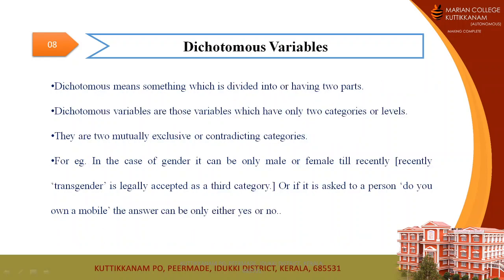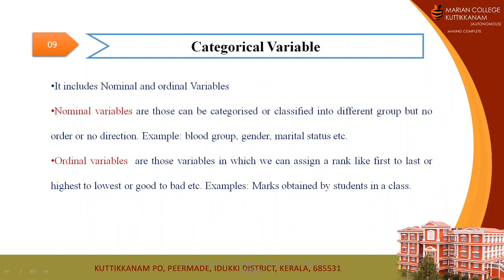Moving on to the next type: dichotomous variable. Dichotomy means something divided into two parts — a positive and negative side. If you ask a respondent, 'Do you have a mobile phone?' or 'Do you have a laptop?', the answer can only be either yes or no. Only two possibilities are there, so this is what a dichotomous variable is.